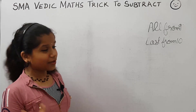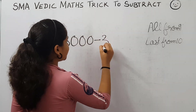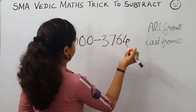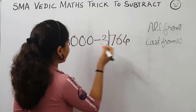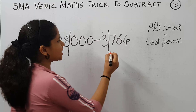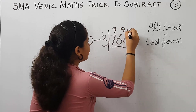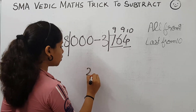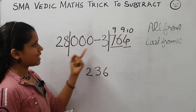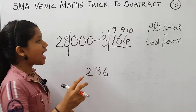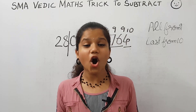Now let's take 28,000 minus 3,764. Here there are 3 zeros and 4 digits, so we put a slash here and here. We apply the rule all from 9 and last from 10: these digits are subtracted from 9 and the last from 10. 9 minus 7 is 2, 9 minus 6 is 3, 10 minus 4 is 6. Now 28 minus 3 is 25, and 25 minus 1 is 24. The answer is 24,236. I hope you all enjoyed this video.